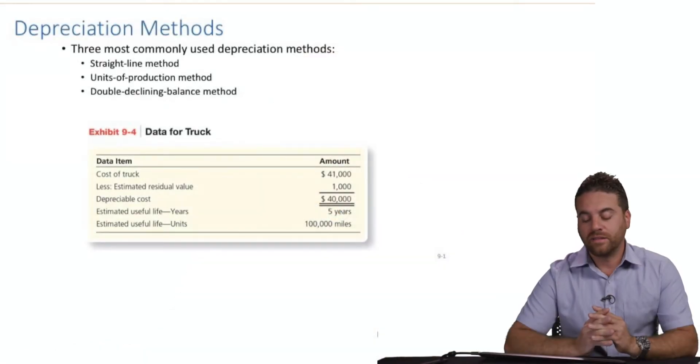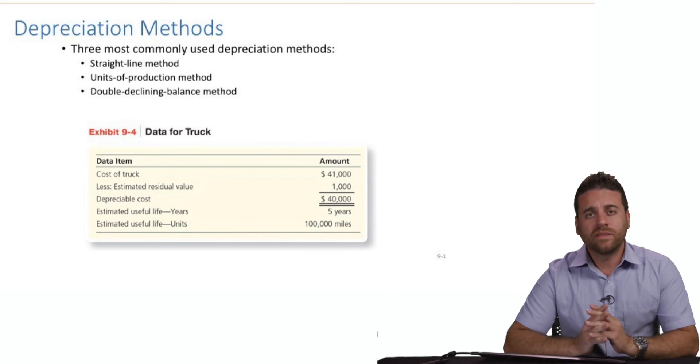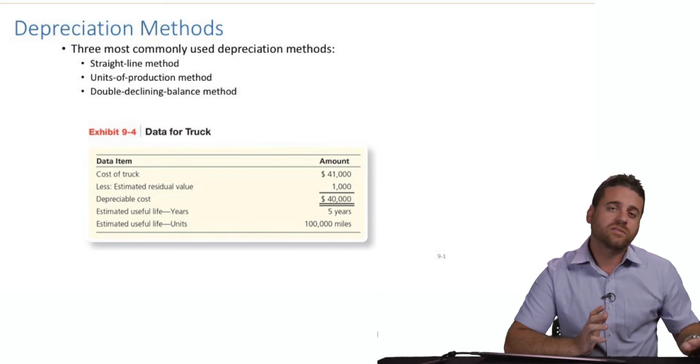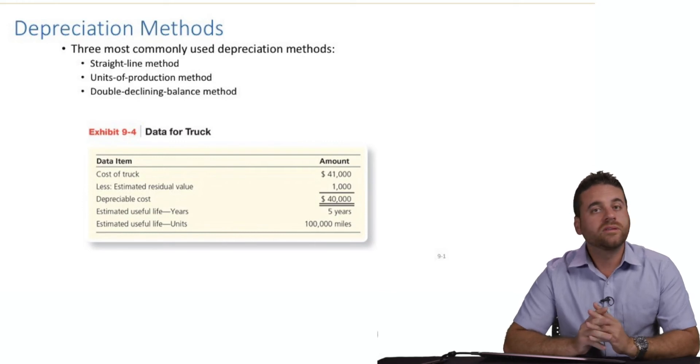The topic in this video is depreciation, and we're going to talk about three different methods. The first method is called the straight line method, the second is the units of production method, and the third is the double declining method. This particular video, we're going to discuss the straight line method with an example.